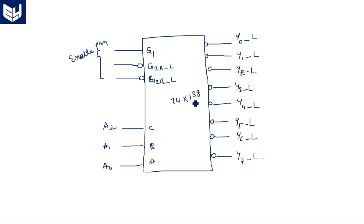This is the 74138 decoder. In examinations you may be asked to draw the IC diagram of 74138 and explain its operation with truth table, or to write the VHDL code for 74LS138. You must understand that 74LS138 specifies it is a 3-to-8 decoder. Without knowing its operation, you cannot write the code. By seeing the name, you should understand it is a 3-to-8 decoder.